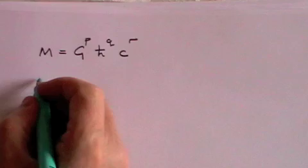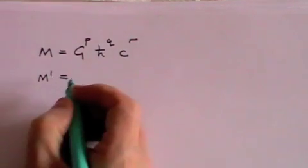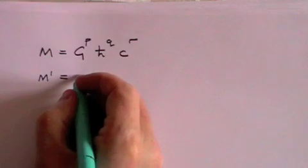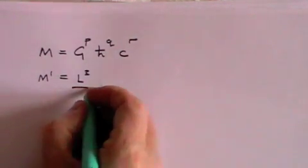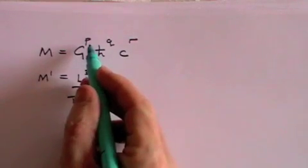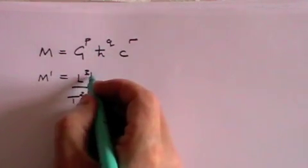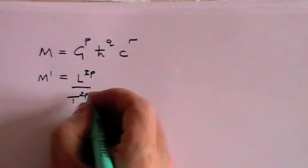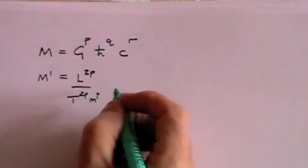Just as we did with L, we're going to write these dimensionally. So we've got G which is L-cubed over T-squared M. But they've all got to be raised to the power P. So that is L to the 3P, T to the 2P and M to the P.